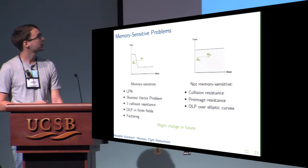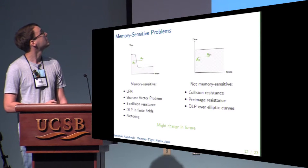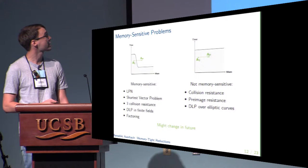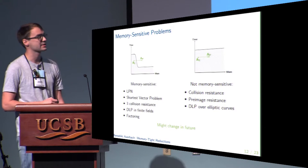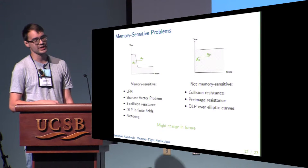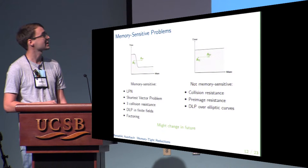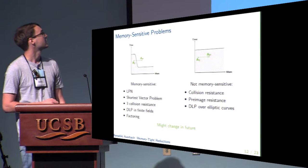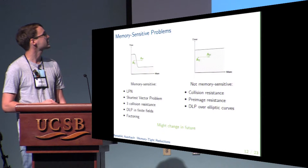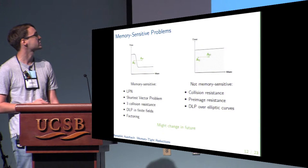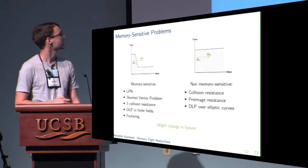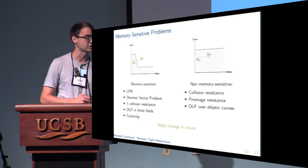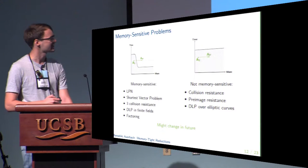However, for other problems the best known algorithms only require small memory. In this case, while a memory-tight reduction still yields a stronger result, it's harder to measure its advantage. Problems of this type include finding a collision in a hash function, pre-image resistance in hash functions, or solving the discrete logarithm problem over elliptic curves defined over prime fields.